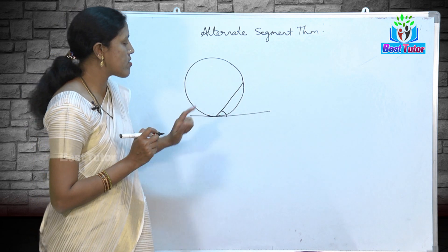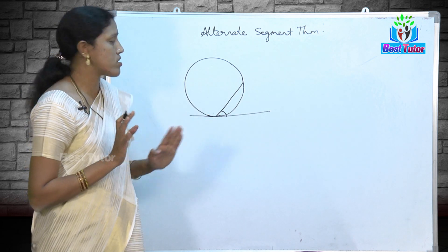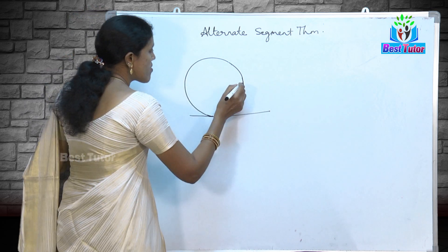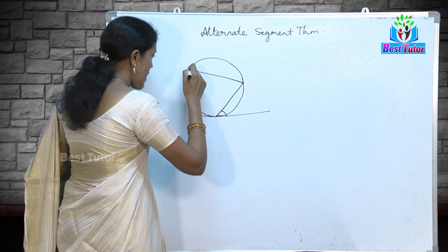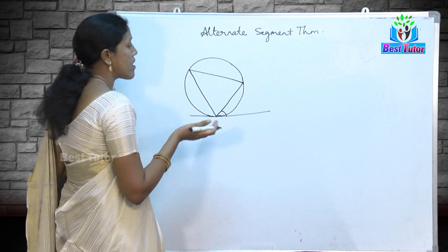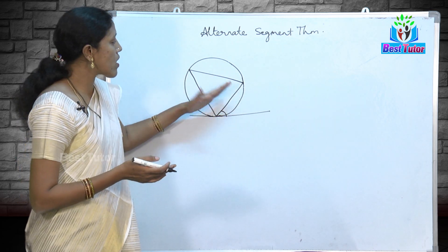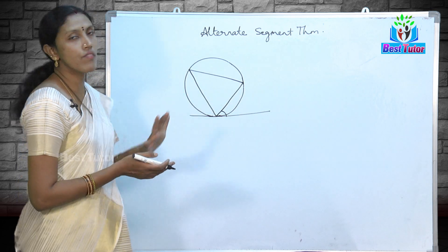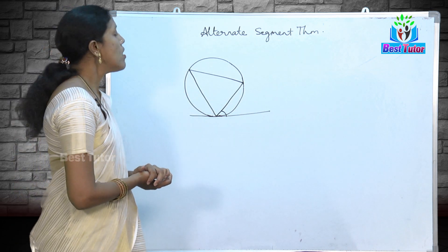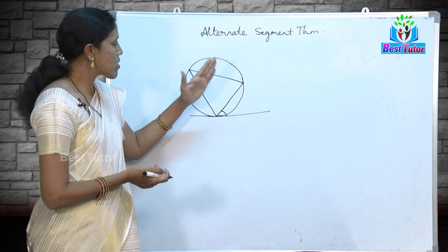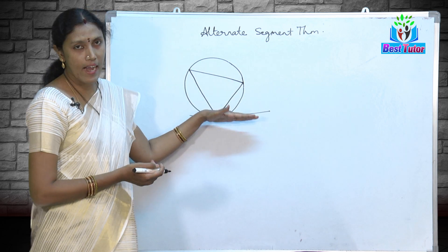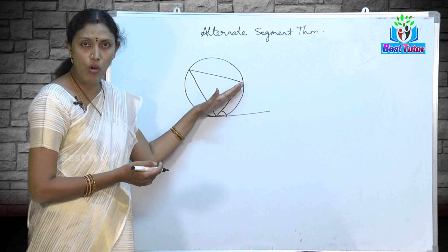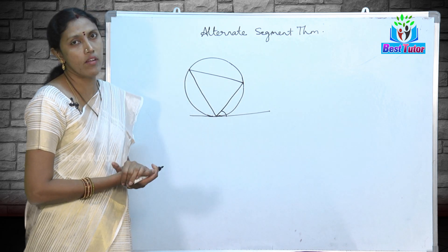I will consider this segment. This is the angle which is going to be under consideration — the angle between the chord and the tangent. Now this chord is going to make another angle in the alternate segment. The statement of the theorem is: the angle between the chord and tangent is equal to the angle made by the same chord in the alternate segment.